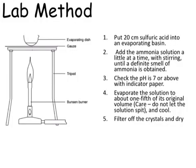A simple method for doing this in the lab is adding sulfuric acid to ammonia, either in an evaporating basin or using titration. The steps are: adding sulfuric acid to the ammonia, checking it with indicator paper, evaporating it off, then filtering and drying the crystals. The crystals are our pure ammonium sulfate.